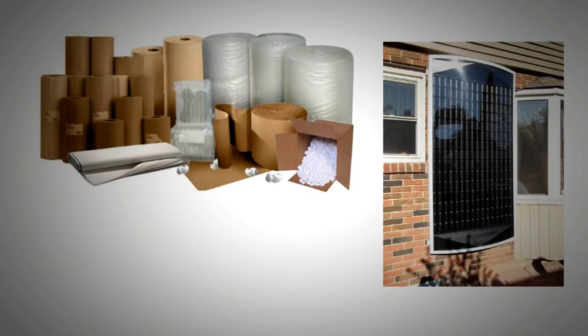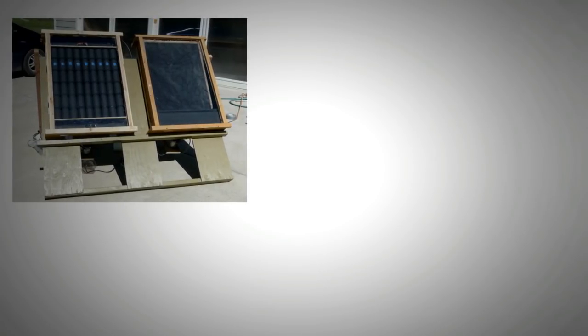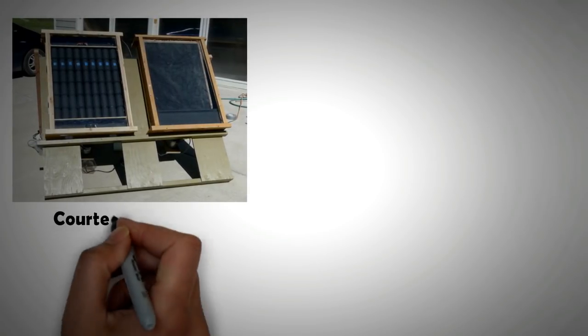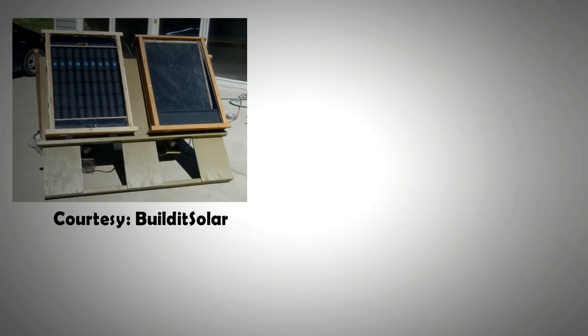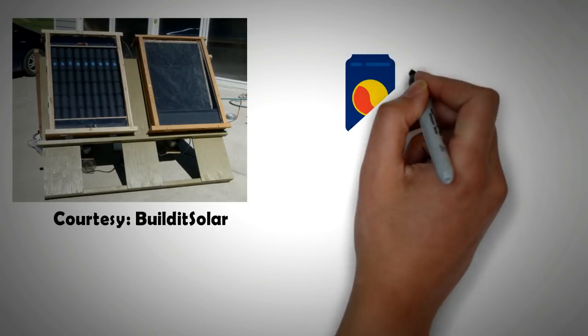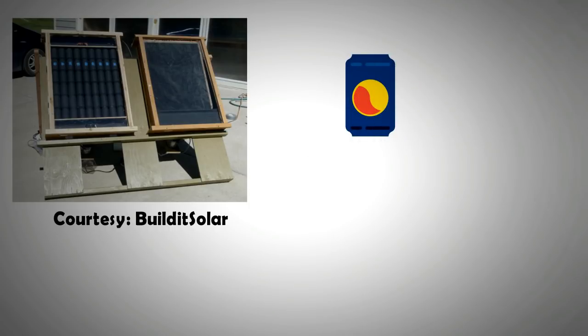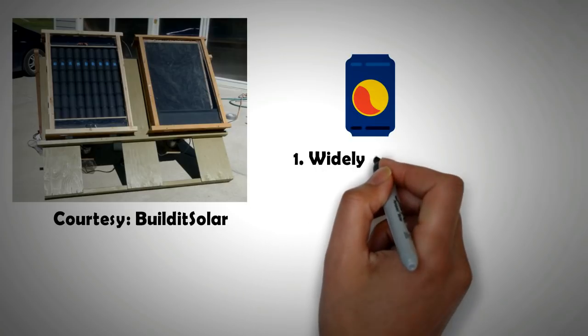There are many designs for solar air heaters available on the internet. Many of them employ used tin cans for creating absorber pipes. The advantage of using tin cans is twofold: firstly they are readily available, and secondly their wall thickness is small. This means that the air inside can get hot efficiently.